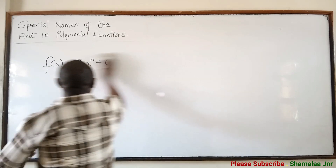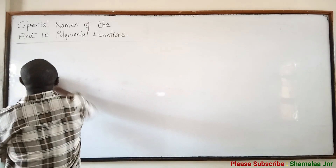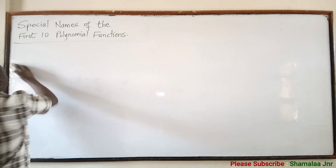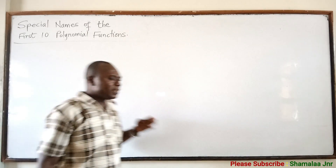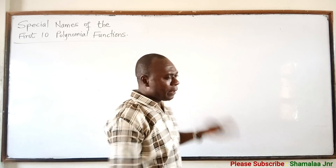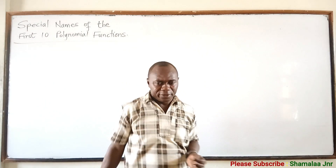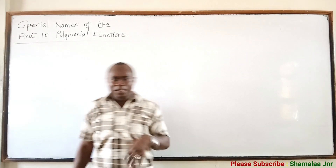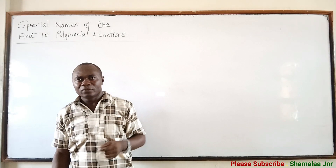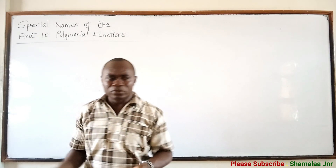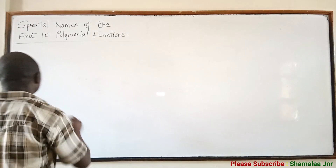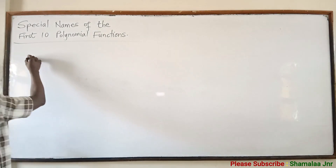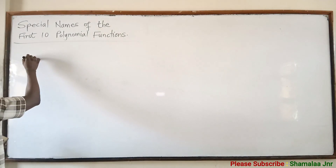So when you have a polynomial of degree 1, what is the name given to that polynomial? If the degree is 6, what is the name given to that polynomial? So let's look at it.